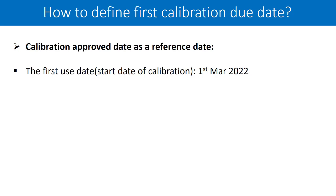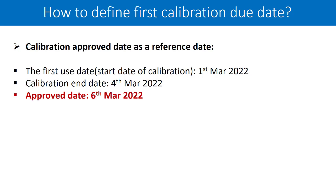I am talking about the effectiveness of your SOP, not the qualification, because the qualification comes before the implementation of your SOP or the calibration methodologies. So your first use is actually your calibration start date. On this date you used the instrument for the very first time, and that happened to be 1st March 2022 in this example. The calibration end date is 4th March 2022 and the approval date is 6th March 2022. Based on the approval date as the reference date, the calibration due date should be 6th September 2022.